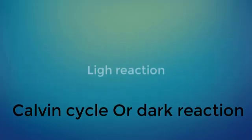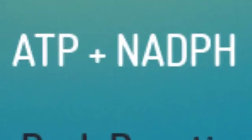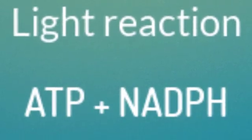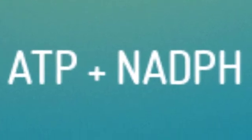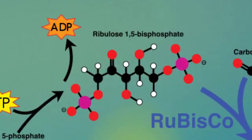You know Calvin cycle or dark reaction is a process that occurs after light reaction in photosynthesis. It helps in producing glucose from the products that are produced inside light reaction like ATP and NADPH. ATP and NADPH are used here to produce glucose.